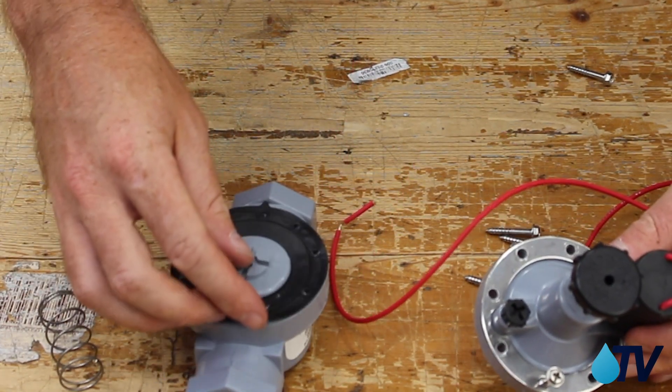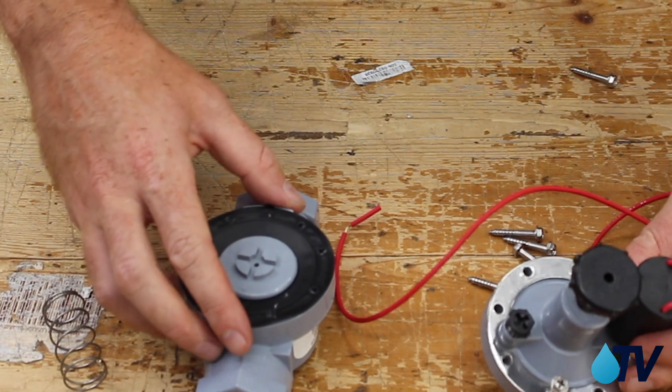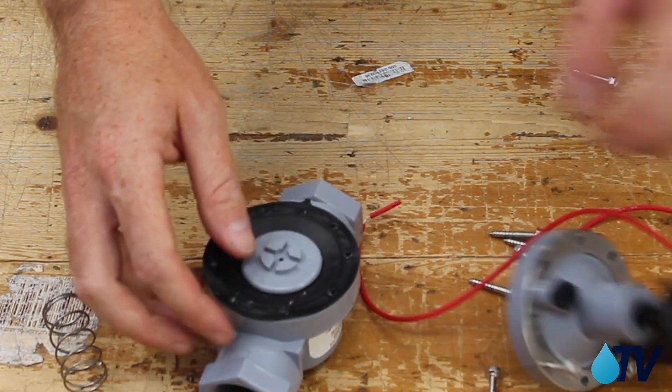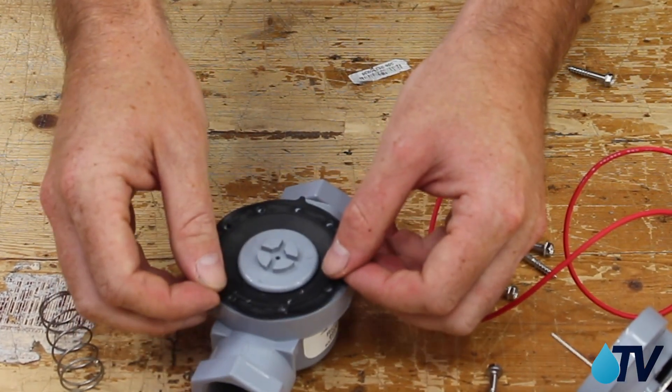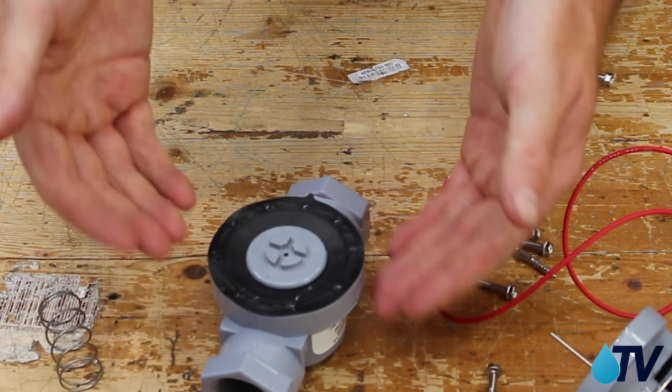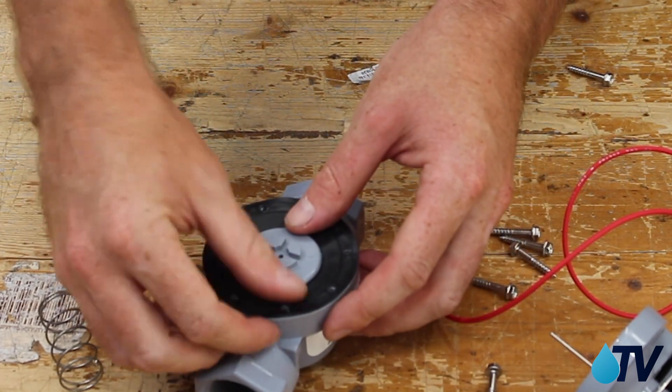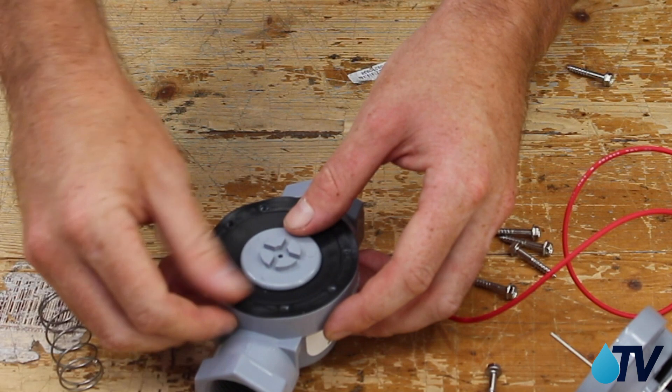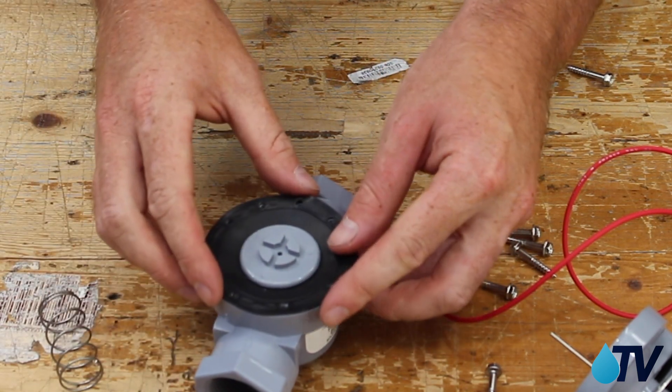Now the thing is, when these solenoid valves of any brand fail, it's often because there's damage to this diaphragm. It's very important that it's well sealed and you don't want any debris or rubbish that's going to cause that seal to be broken.